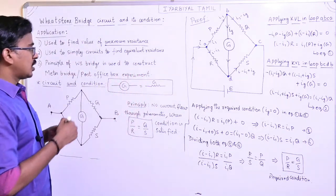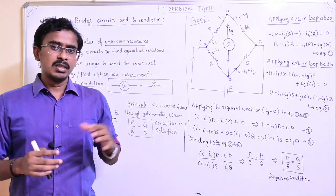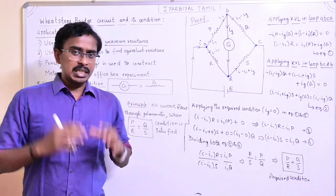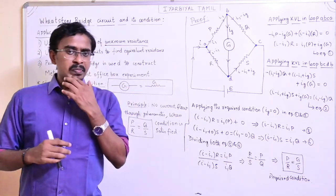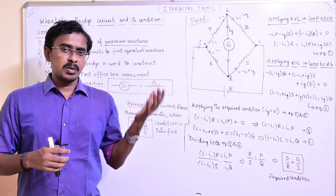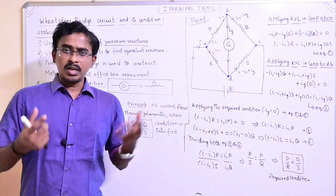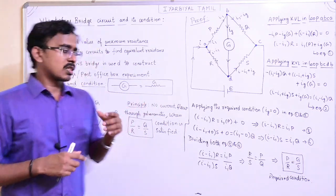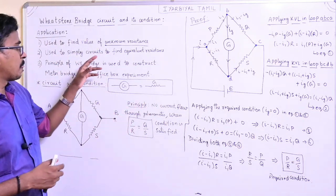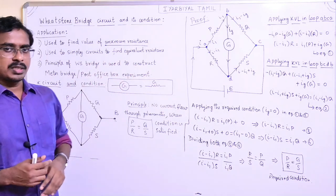In complex resistor circuits, we can reduce resistors in a series-parallel combination to reduce the resistance. In those complex cases, the Wheatstone Bridge condition will be satisfied, and we can reduce the circuit easily. That is the application.